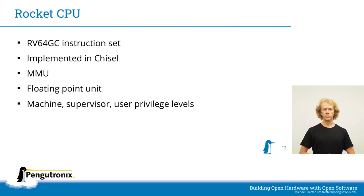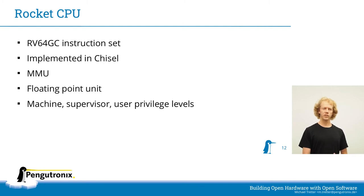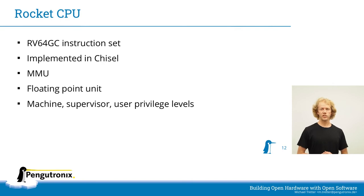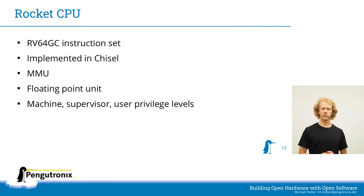The Rocket CPU core supports the RV64GC RISC-V instruction set - a 64-bit instruction set compared to the 32-bit of the VexRISC-V. It is written in the Chisel hardware construction language, which is another Scala-implemented Verilog generator. It has an MMU, branch prediction, a floating point unit, and supports the RISC-V privilege levels required for running Linux.